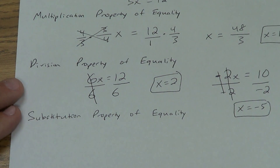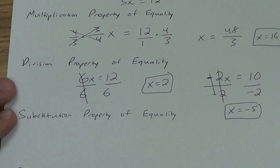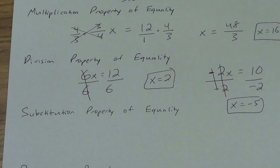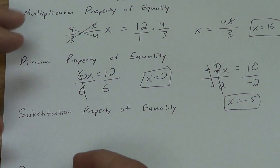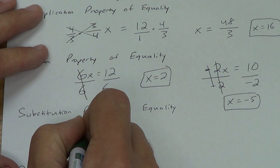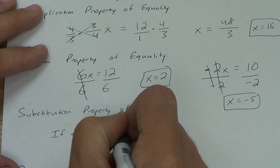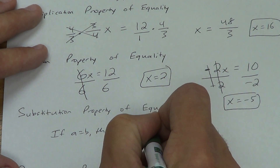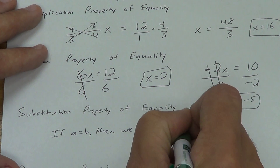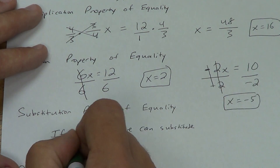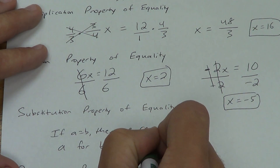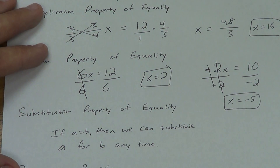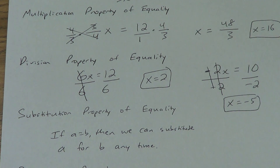Substitution property of equality. This one is not really about doing something to both sides of the equal sign. It says: if a equals b, then we can substitute a for b any time. If two things are equal, we can substitute one for the other — technically we could do b for a as well.